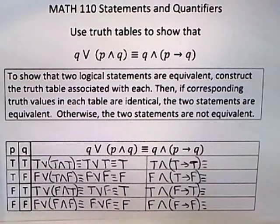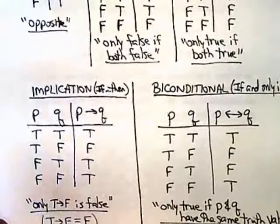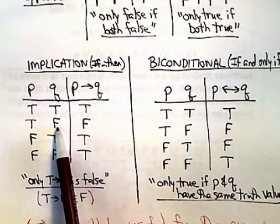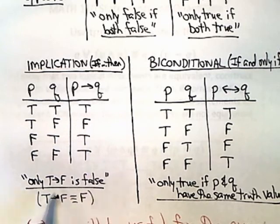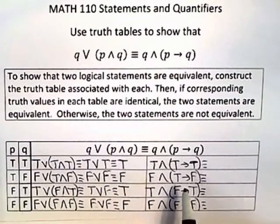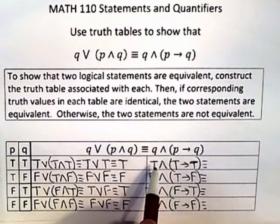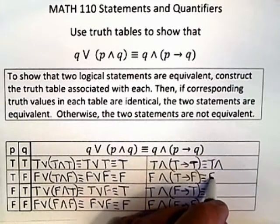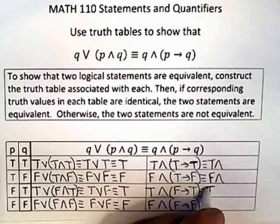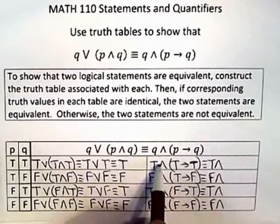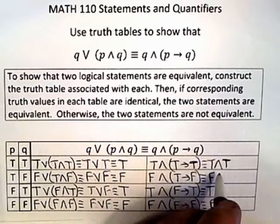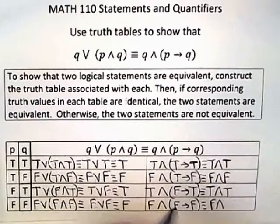Inside the parentheses I have an implication. Just for completeness: the implication truth table has only one case where you get false, and that is when P is true and Q is false — true implies false gives false. Everything else is true. So true implies true is true, true implies false is false, false implies true is true, and false implies false is true.